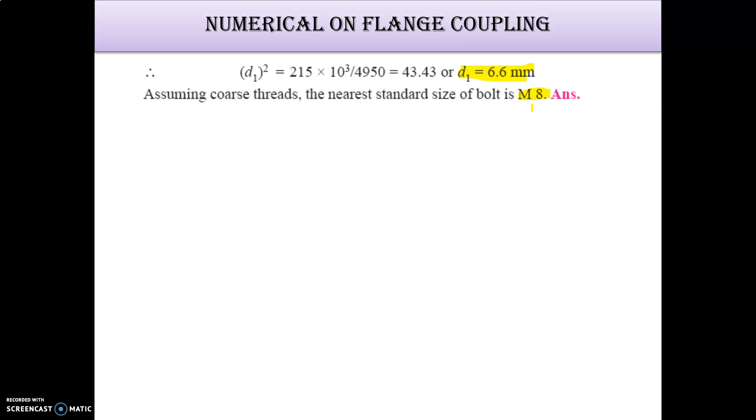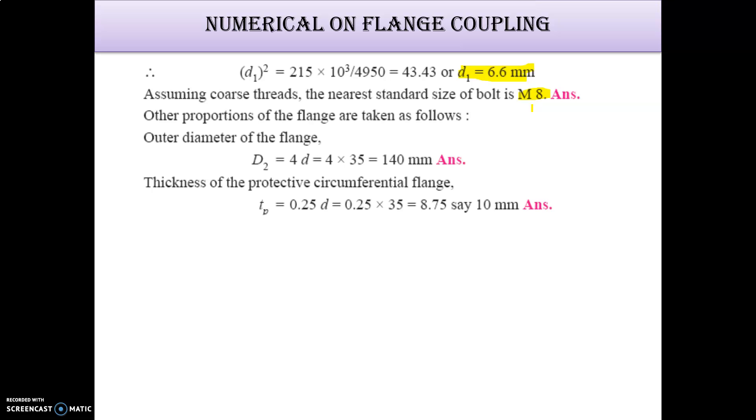This is how we are going to design a flange coupling. The outer diameter of flange, D2, is 4 times small d, that is 140mm. It is a protective circumferential flange, that means 0.25 times small d, 8.75, we can say 10mm. So we take it 10mm, and this is how the design of flange coupling is completed.